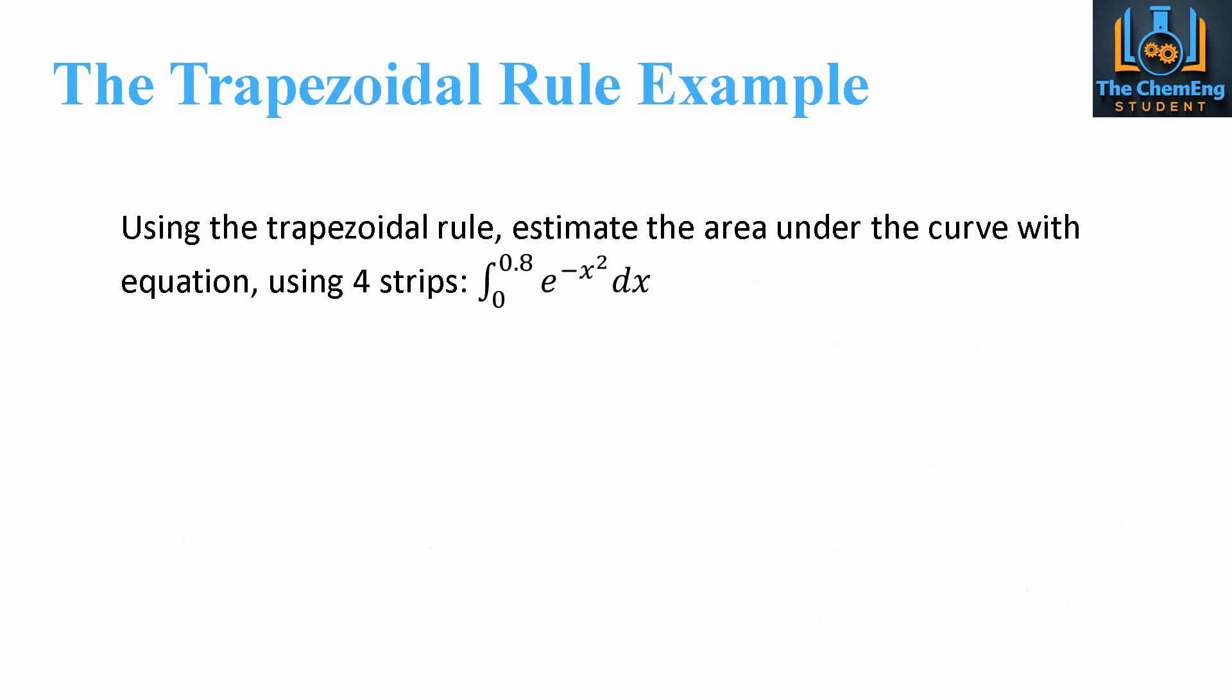Now let's see how we would actually go about using this rule. So we want to estimate. Now again, this is key. It doesn't ask us to determine. It asks us to estimate. Because with these rules, you have some form of error. So we can't actually give the definite answer. Now we want to use four strips, so that means we're going to have four different rectangles of the equation of the integral between 0 and 0.8 of e to the power minus x squared dx.